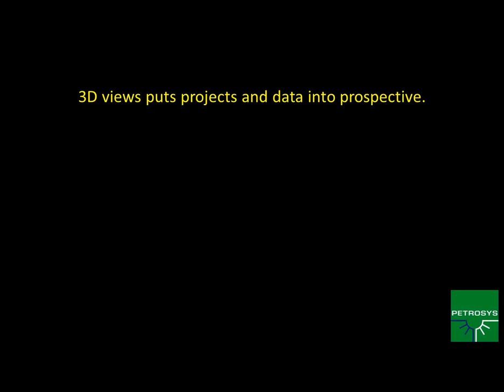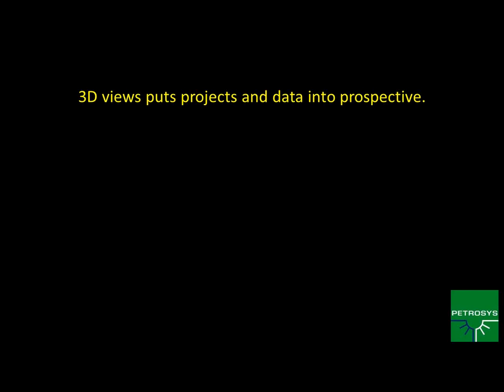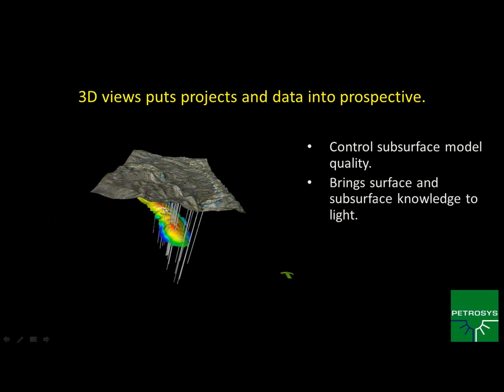The main thing we're going to show is how you can use 3D views to put your data into good perspective. First, you can use the 3D viewer to control subsurface model quality — making sure your gridded data looks correct around faults, covering the areas you think it should, and making sure there's not a lot of crossover happening between different horizons or formations. It's really easy to quickly spot any problems.